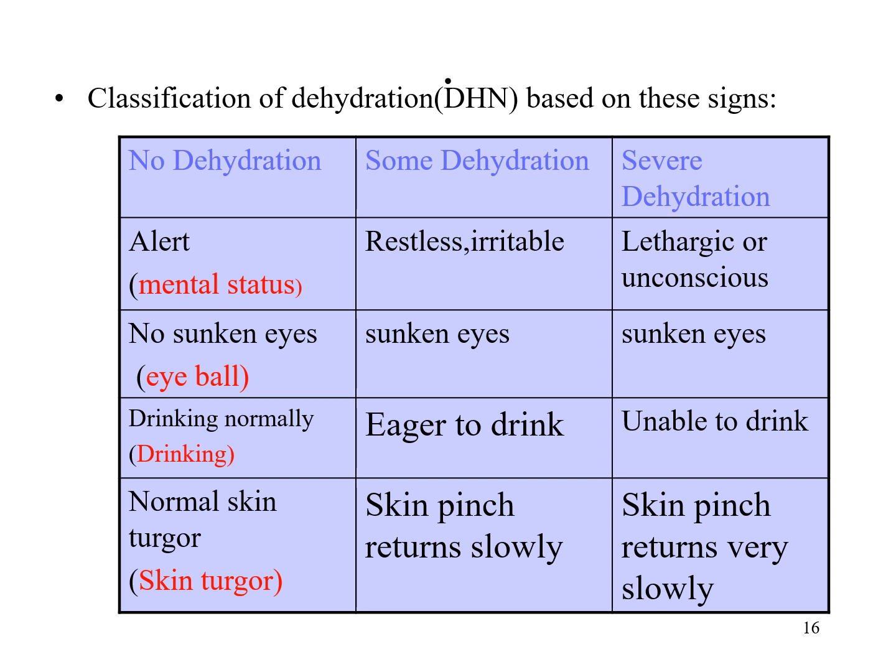We classify dehydration into no dehydration, some dehydration, and severe dehydration based on the signs. If there is restlessness, sunken eyes, eagerness to drink, and skin pinch returning slowly — and two out of those four signs are present — we call it some dehydration. If there is lethargy or unconsciousness, sunken eyes, inability to drink, and skin pinch returning very slowly, and two out of those four criteria are present, we call it severe dehydration. If there are no signs of some or severe dehydration, we classify it as no dehydration.